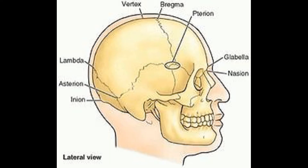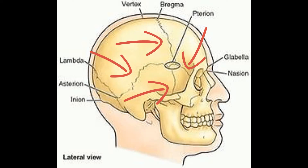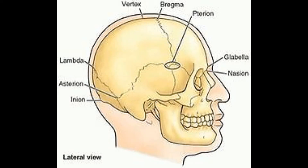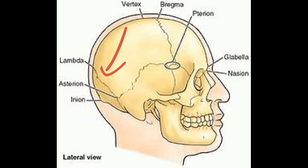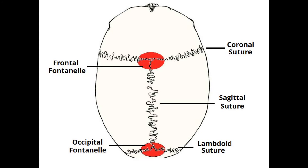There are two other points to know. The pterion is the point where the frontal, parietal, temporal, and sphenoid bones meet. Then you've also got the asterion, which is where the parietal suture meets the mastoid suture — the parieto-mastoid suture. So once again: MCSL — monkeys can't sleep long.